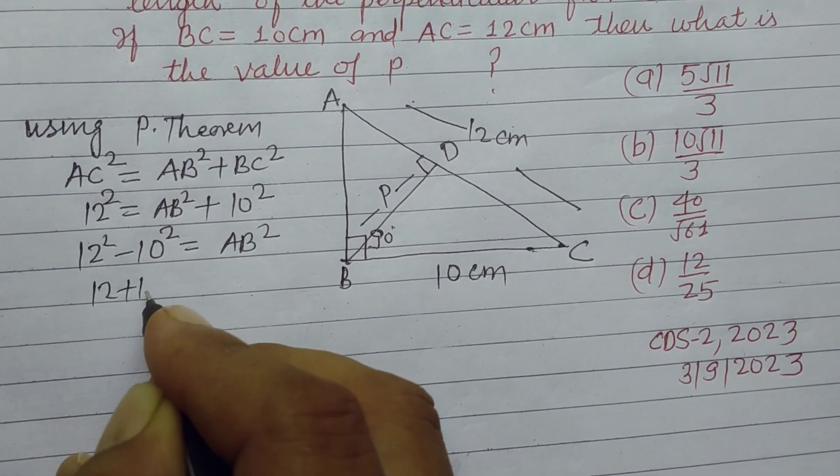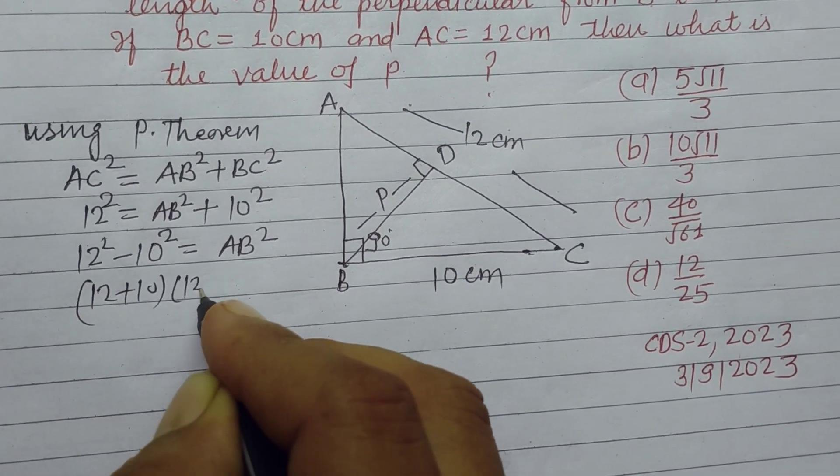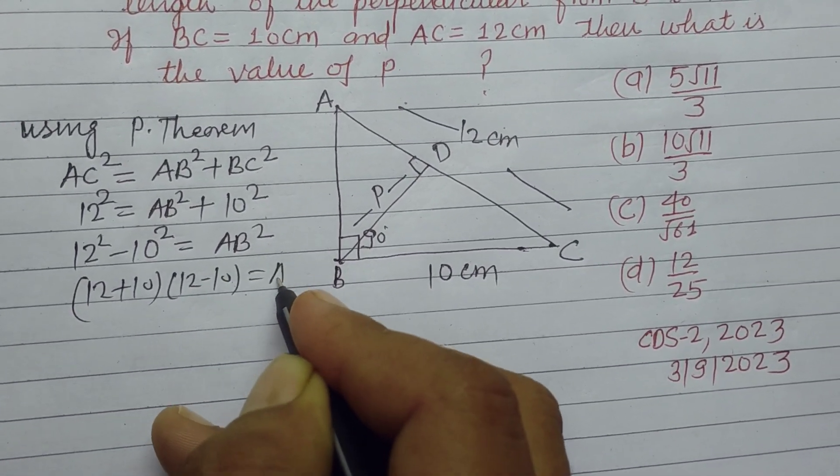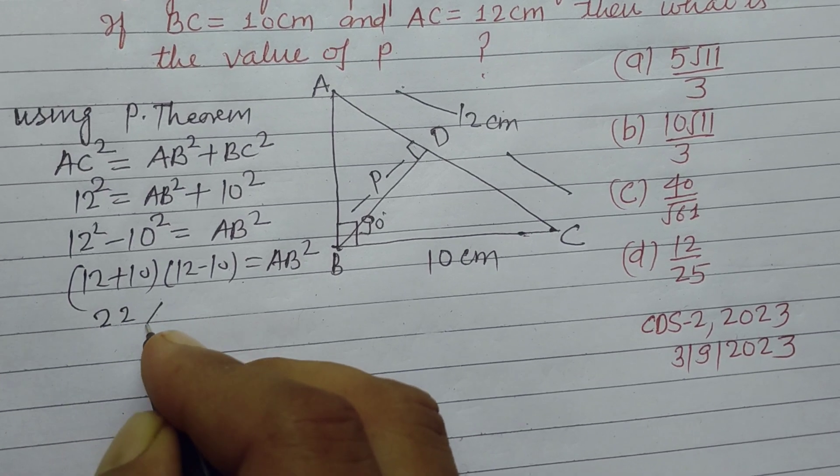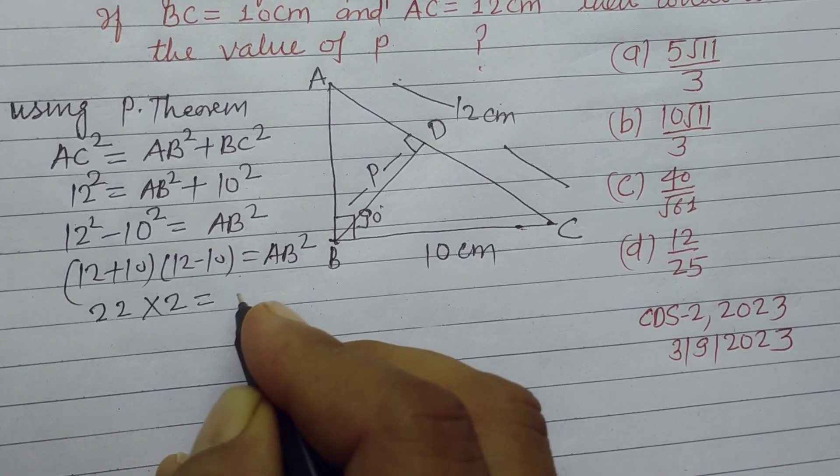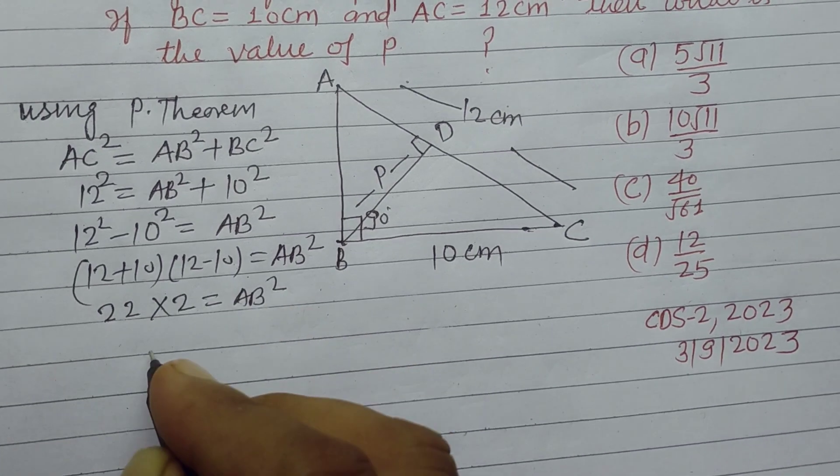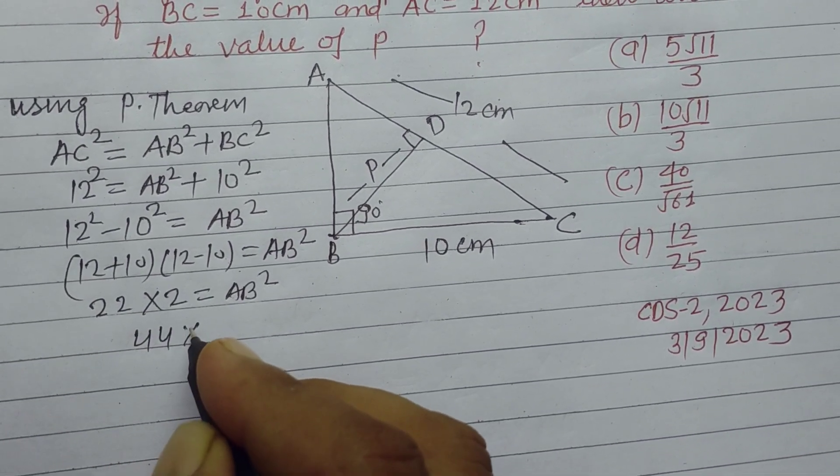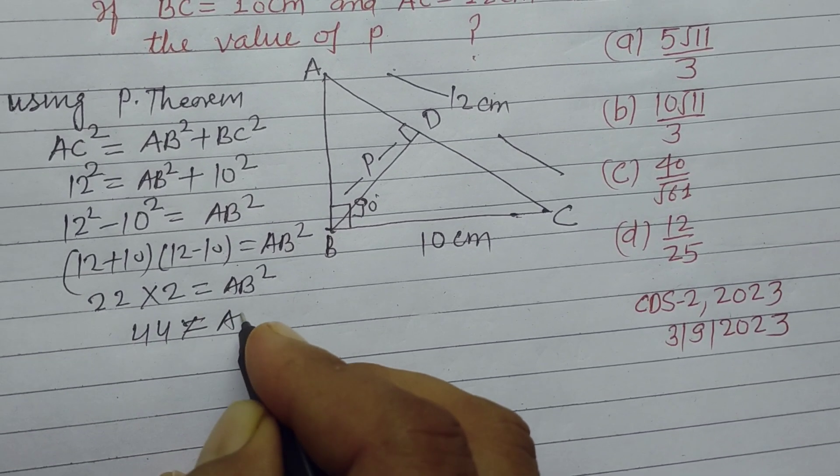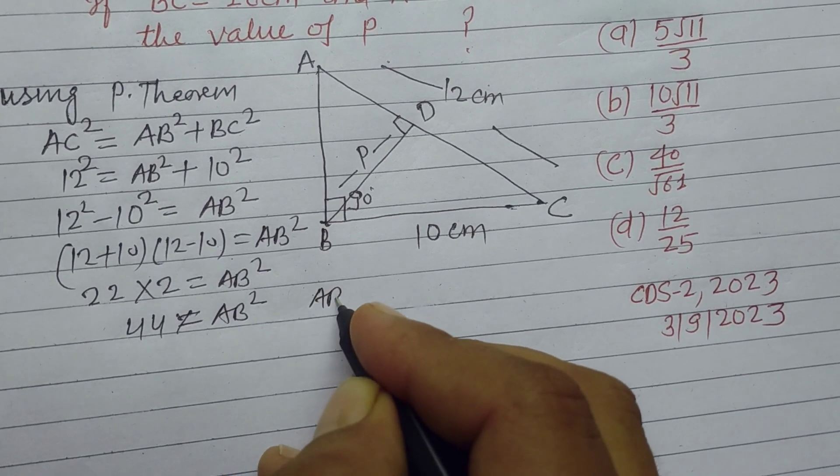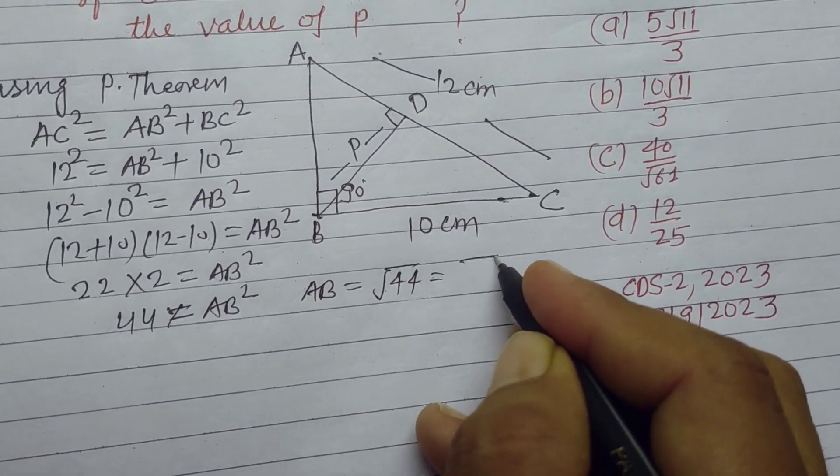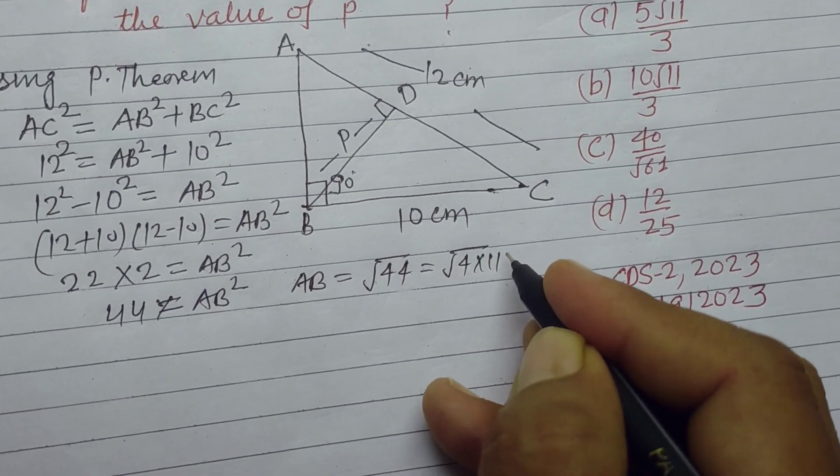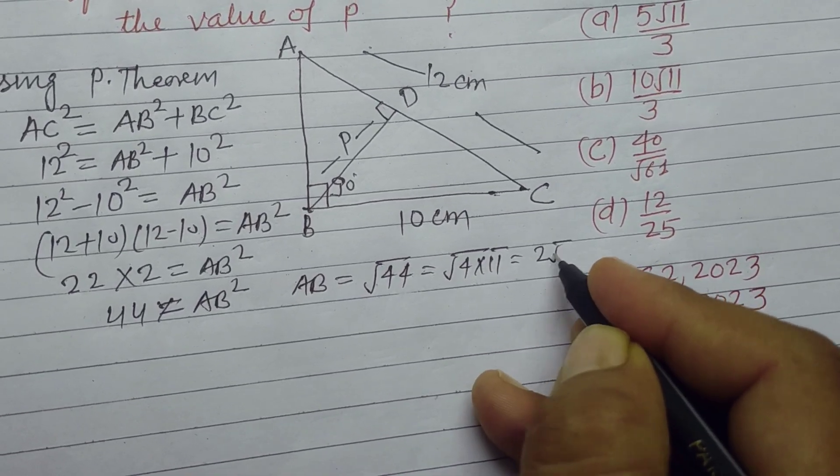This is 12 plus 10 into 12 minus 10 equals AB². This is 22 into 2 equals AB². This is 44 equals AB², or AB equals square root of 44, which can be written as square root of 4 into 11, or 2 square root of 11.